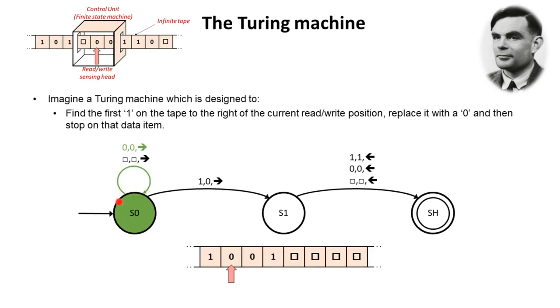So the Turing machine starts in state zero and we discover in this location a zero. So the input is zero, we replace with a zero and we move the read write head to the right.